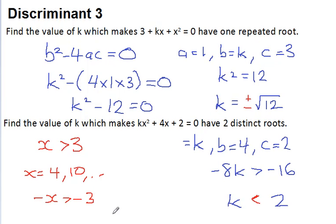But minus 4 is not greater than minus 3. It's less than minus 3. Minus 10 is not greater than minus 3. So when we multiply or divide by a negative number, we do have to flip the sign around. Okay?